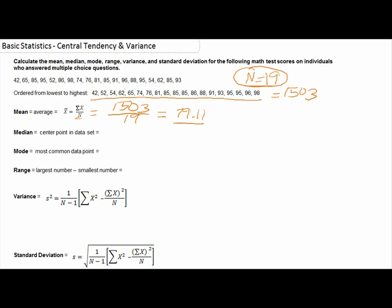So if we count over, one, two, three, four, five, six, seven, eight, nine, our tenth data point, 85, would be our median. So our median is 85.